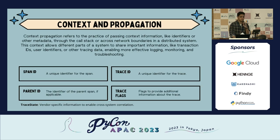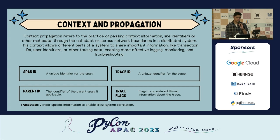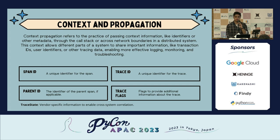Context propagation in telemetry works like this: you have a span ID — every span has its own ID — but the trace ID is the same for all spans within a single request. You also have a parent ID: if a span calls another span, the calling span becomes the parent span and the called one becomes the child span. Then there are trace flags for additional trace information, and trace state which is vendor-specific — depending on whether you're using New Relic, Grafana, or whatever you're working with.